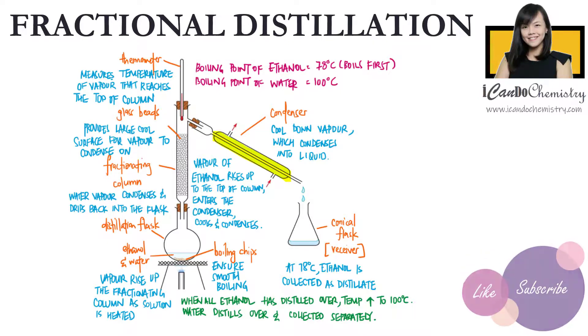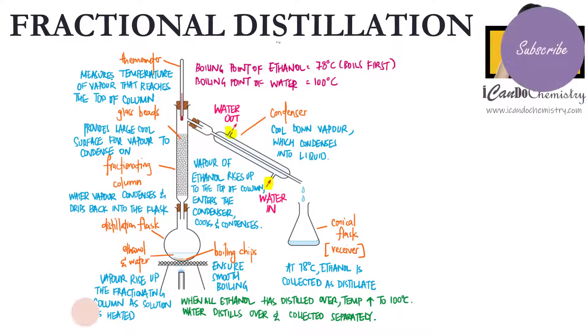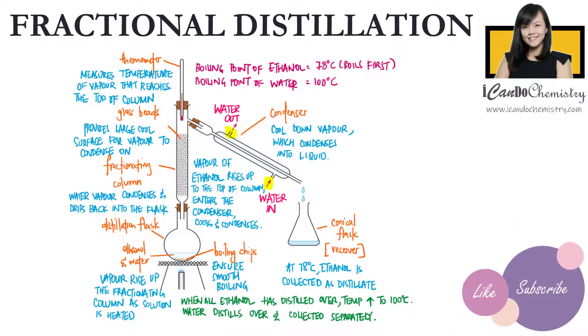The condenser should be sloping downwards to ensure that the pure liquid is able to flow downwards into the receiver. Condenser has two tubes. Cold water flows in from the tube at the bottom while flows out from the tube at the top. This ensures that the whole condenser is filled up with cold water and provides an excellent cooling system for the vapour.